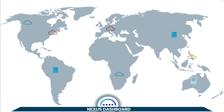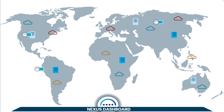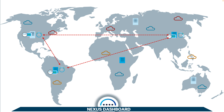Data centers and clouds are spread across the world, and although Nexus Dashboard's architecture allows you to have cluster nodes in multiple locations, they still have to synchronize between them. They are a cluster of Kubernetes services. Therefore, having that synchronization happening over large geographical distances might not always be desirable.